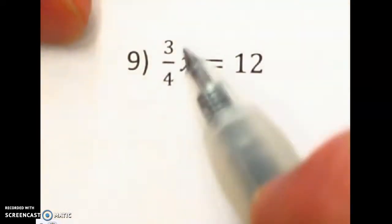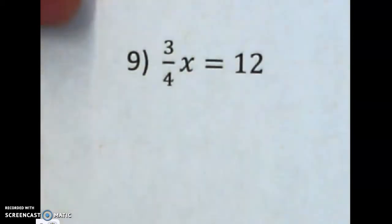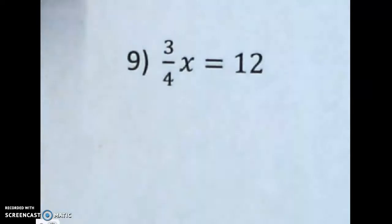All right. On this one, I'm going to be getting rid of a fraction that is multiplying a variable. We're going to do this in one step. We're going to use something called multiplying by the reciprocal.